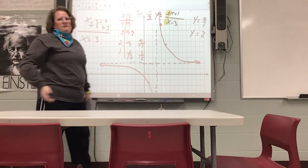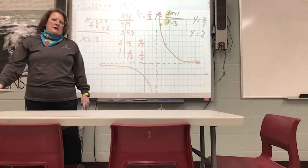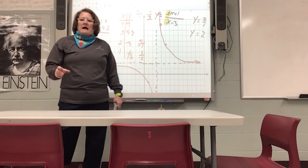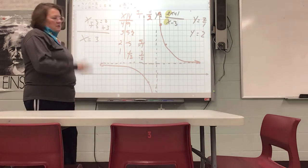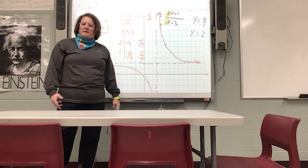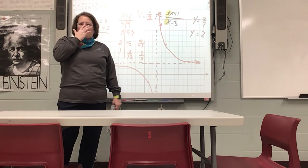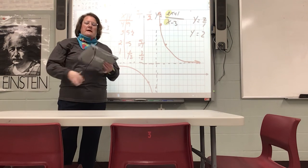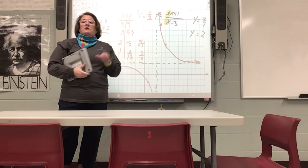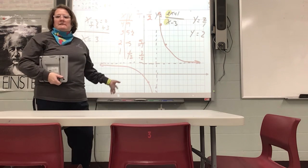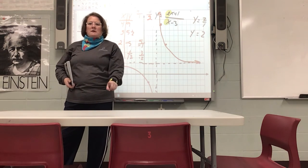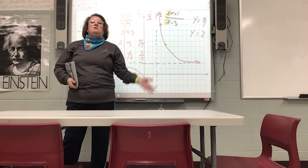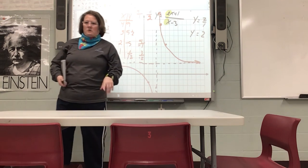One thing to note: our graphing calculators aren't HD, so sometimes it looks like the curves touch the asymptotes or are connected, but they really aren't. We know that and can make adjustments. Tomorrow I'm going to give you three of these to graph — starting with a simple one, then a medium one, then finishing with this binomial type, just like we did in today's video. That will be your assignment for tomorrow.